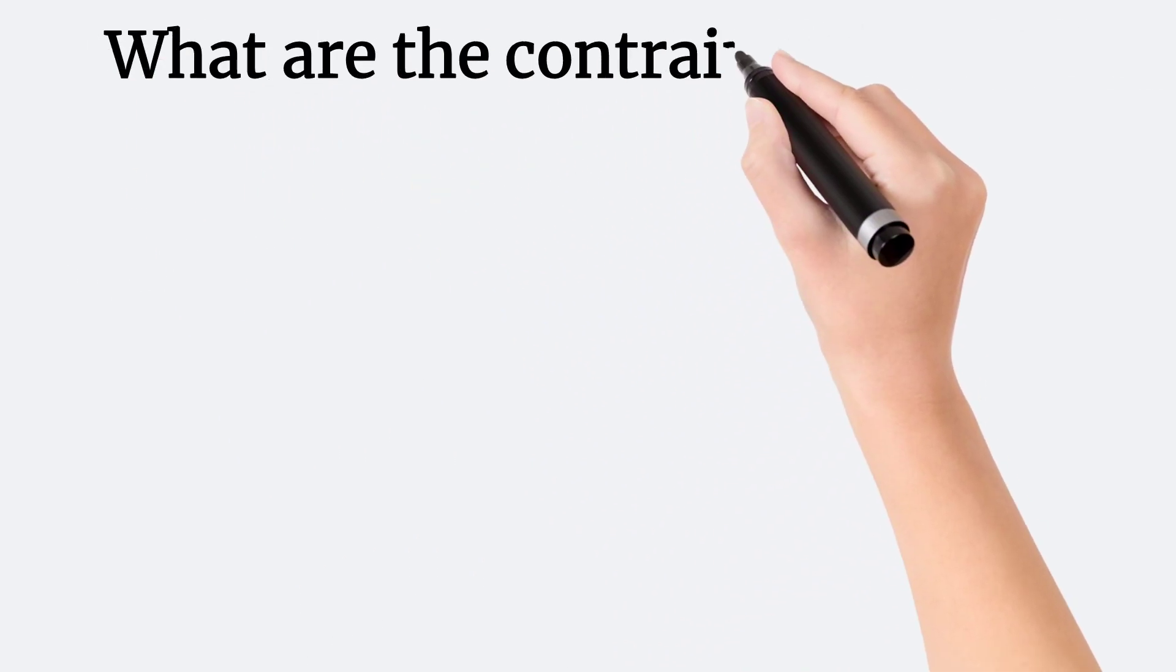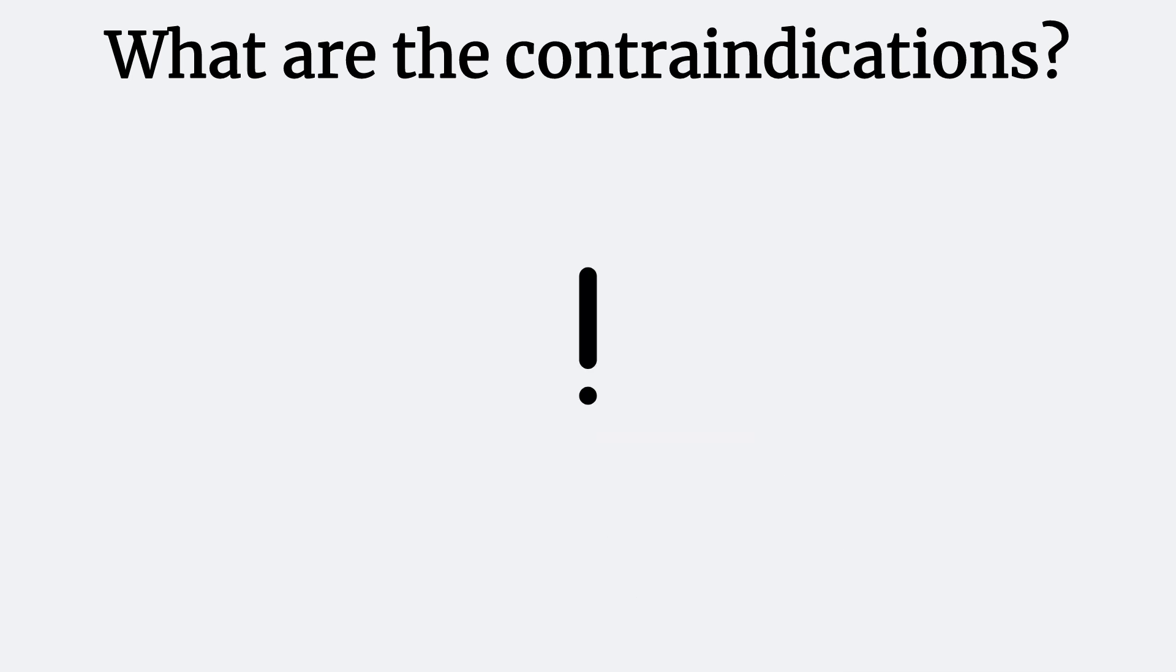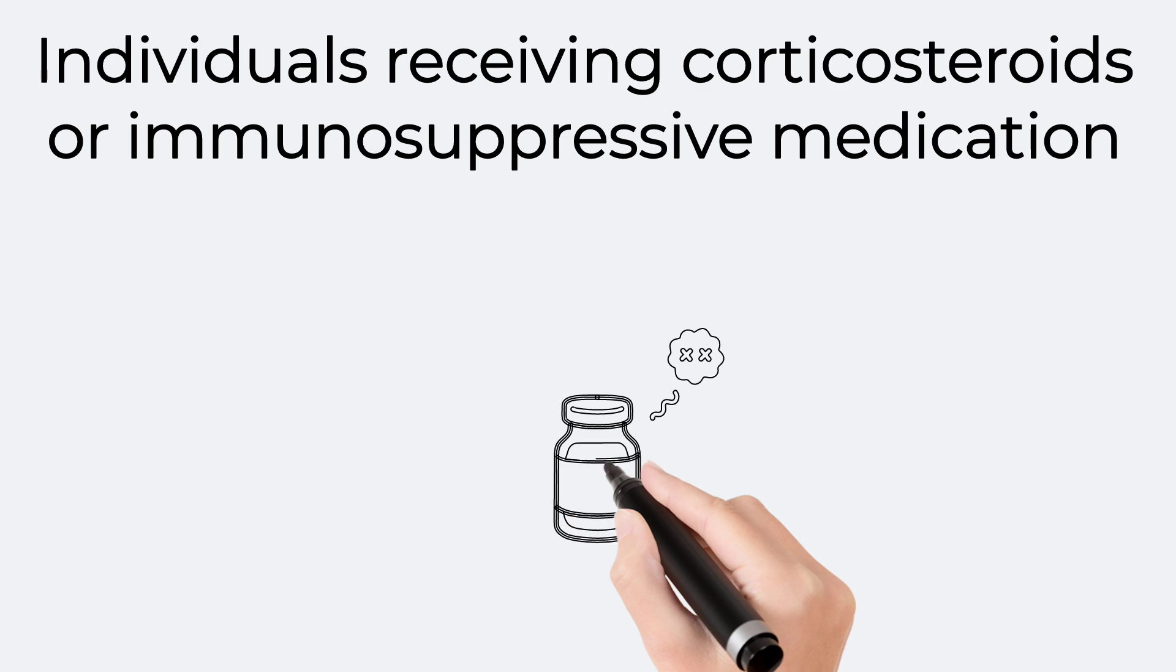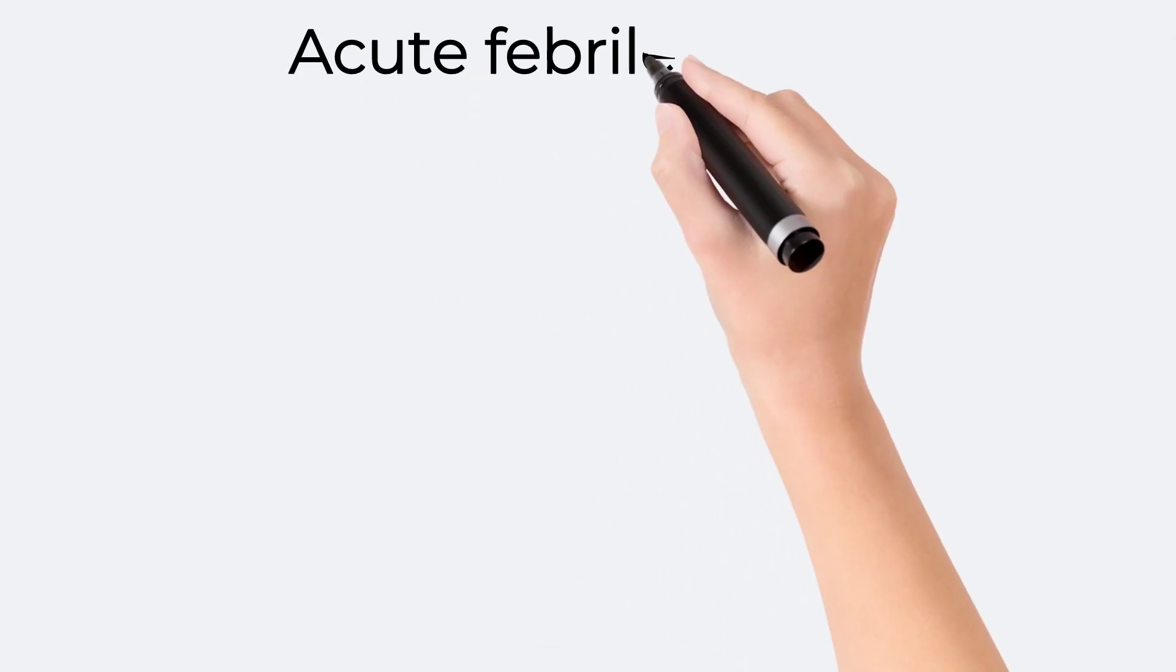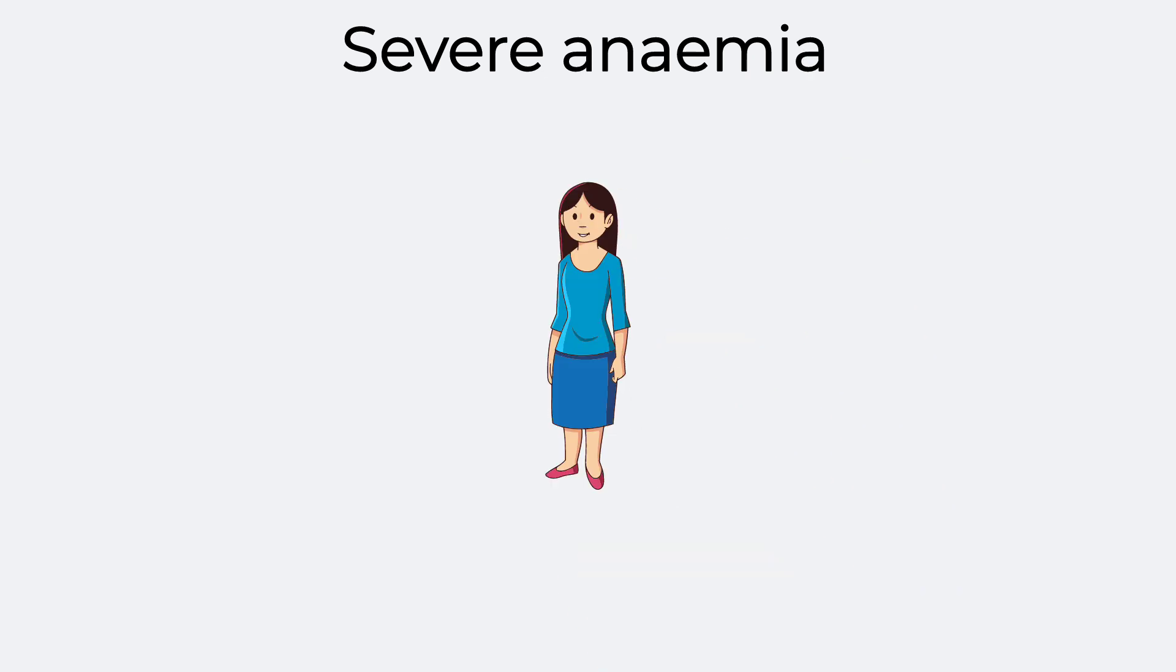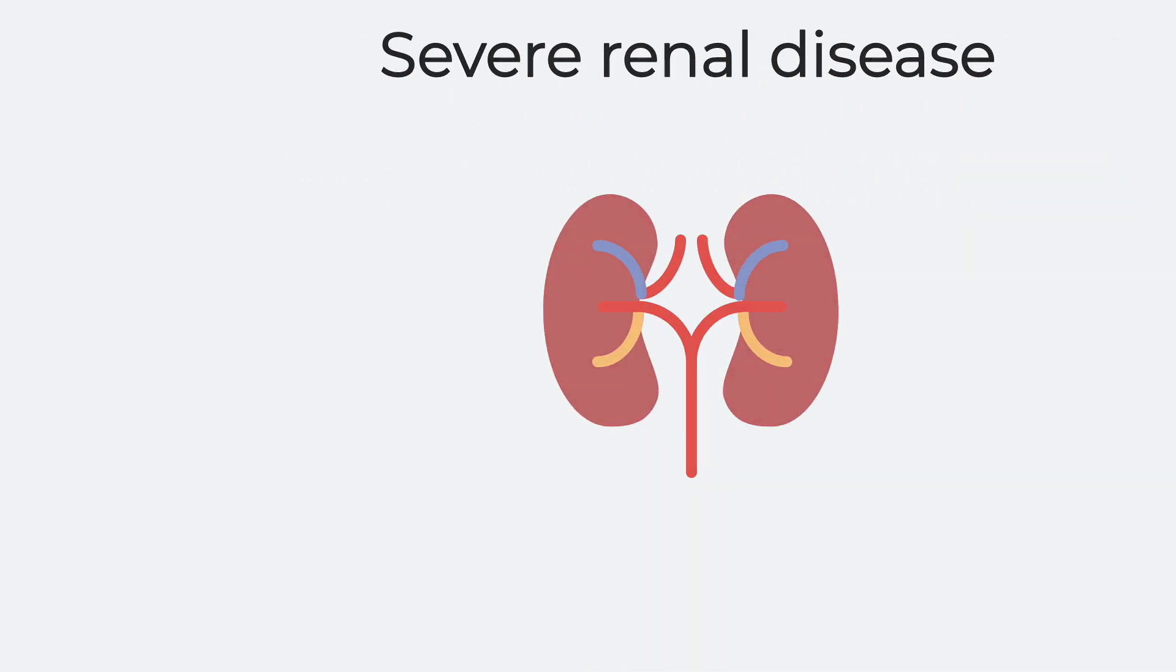What are the contraindications for the MMR vaccine? Individuals receiving corticosteroids or immunosuppressive medication, acute febrile illness, pregnancy, leukemia, and severe anemia.